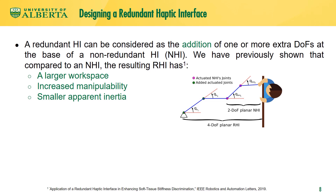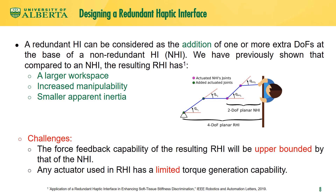A redundant haptic interface can be considered as the addition of one or more extra degrees of freedom to the base of a non-redundant haptic interface. Compared to a non-redundant haptic interface, the redundant haptic interface has a larger workspace, increased manipulability, and smaller apparent inertia. However, the force feedback capability of the resulting redundant haptic interface will be upper-bounded by that of the non-redundant haptic interface. One immediate way to increase force feedback capability is to use larger actuators and gearboxes with higher gear ratios at the joints, but both increase apparent inertia and may make the interface less backdrivable, which is not desirable.